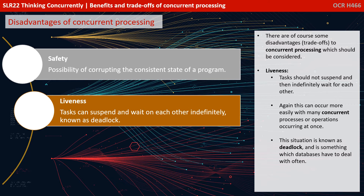We also have the concept of liveness. Tasks should not suspend and then indefinitely wait for each other. This can occur more easily with many concurrent processes or operations occurring at once. If this happens, it's a situation known as deadlock, and it's something which databases, especially large relational databases with many users, have to deal with often.